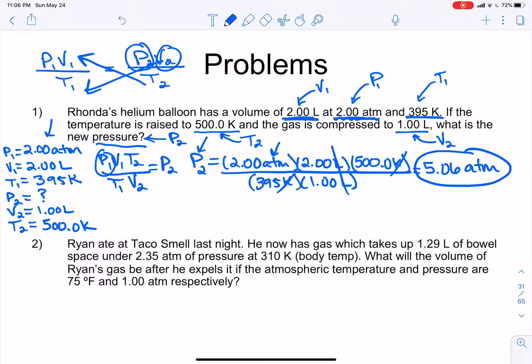And we've got three sig figs there. And our answer makes sense because we increased the pressure from 2 atm to about 5 atm. And we said that we are expecting the pressure to increase because we compressed the gas. We went from 2 liters to 1 liter. And we increased the temperature from 395 to 500 Kelvin, which also should increase the pressure. So yay, that makes sense. All right.